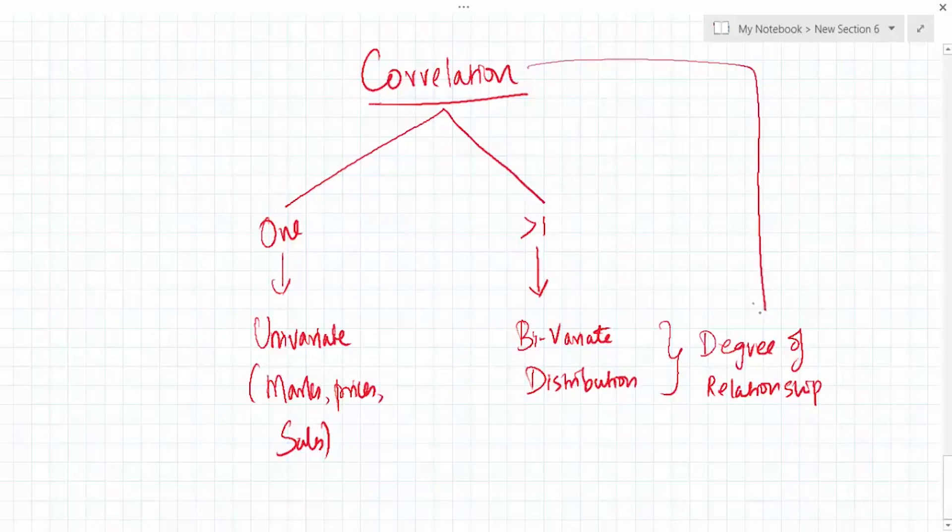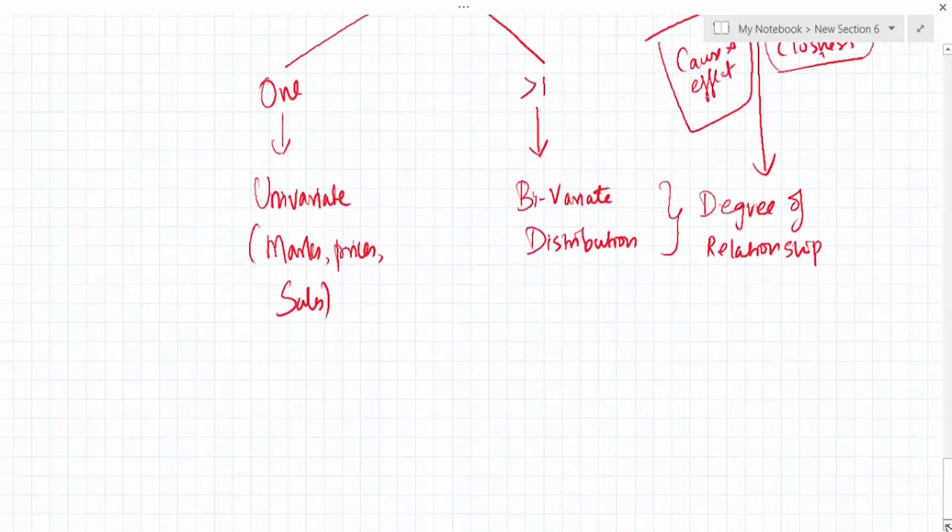We can make use of this tool called correlation. Correlation will basically explain the closeness of relationship between two variables. It will not give what is the cause and effect of the relationship. It will not say why there is a change in one variable due to change in the other variable, but it will tell you to what extent these two variables are related.